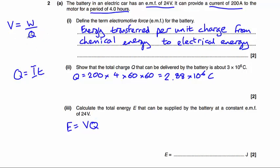It's just a rearranging of this equation. We've replaced the W for work done with an E for energy here. But otherwise, there's nothing to worry about there. So that equals 24 multiplied by our previous answer here, 2.88 times 10 to the power of 6. And that gives us an energy of 6.91 times 10 to the power of 7 joules.